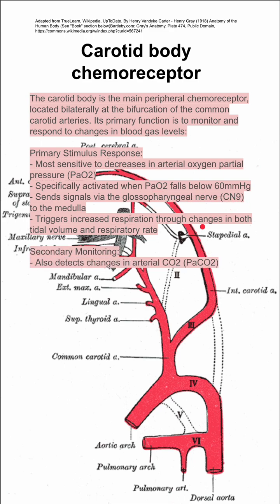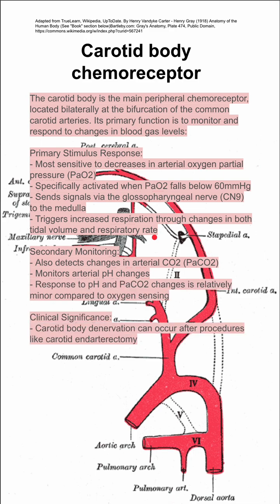The carotid body chemoreceptor triggers increased respiration through changes in both tidal volume and respiratory rate. It does also monitor other things — it detects changes in arterial CO2, that's PaCO2, and it also monitors arterial pH changes. The response to pH and PaCO2, however, is relatively minor compared to oxygen sensing, so oxygen is definitely its primary stimulus.